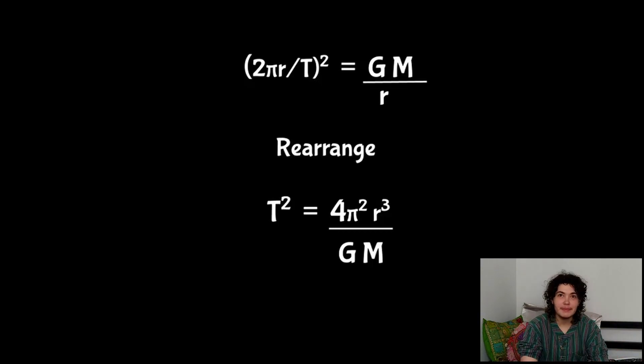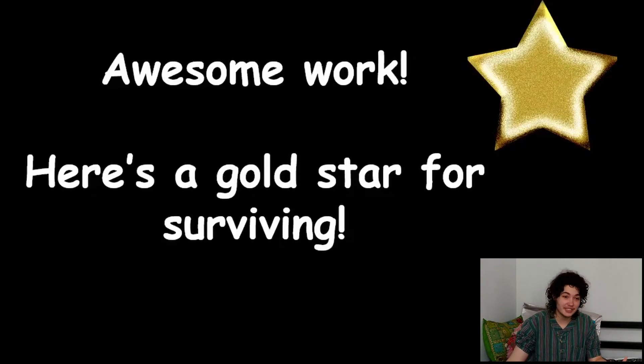Maybe the next video, maybe the video after, I'm going to be going through binary systems. That's when the masses of both the planet, well not really the planet, the star and the other star are roughly similar. Or in the case of maybe like Pluto and Charon you've got the planet being very similar to the moon, if you could even call it a moon. That's basically all of Kepler's three laws. I really hope you enjoyed it and awesome work if you were able to catch up with me. Here's a gold star for surviving all of that. I hope you enjoyed that, I will see you very soon, bye!